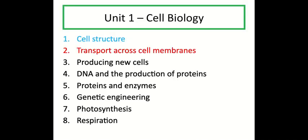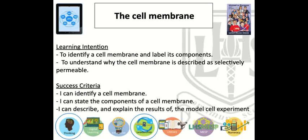We're still in Unit 1, Cell Biology, and we're now on Key Area 2, Transport Across Cell Membranes. Today we're going to try and identify the cell membrane, label its components, and understand why the cell membrane is described as being selectively permeable. Your success criteria is that by the end of the lesson you can identify a cell membrane, state its two components, and describe and explain the results of the model cell experiment.